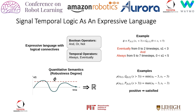STL consists of a set of predicates which are inequalities of real-valued functions, a set of Boolean operators, as well as temporal operators. With STL, we can express requirements on temporal sequences such as: eventually from 0 to 2 time steps, S1 has to be smaller than 3, and always from 5 to 7 time steps, S1 has to stay within the range of 0 to 5. STL is equipped with a set of quantitative semantics, also referred to as robustness degrees, which is a function that takes as input an STL formula and a state sequence, and outputs a number called robustness value, or robustness for short.